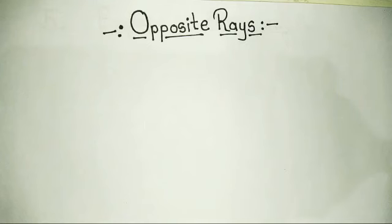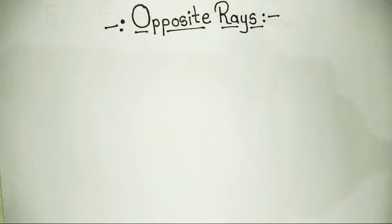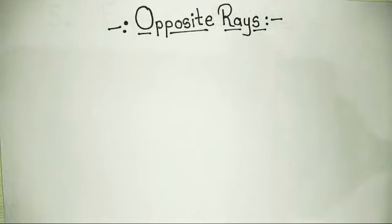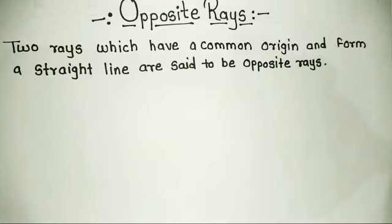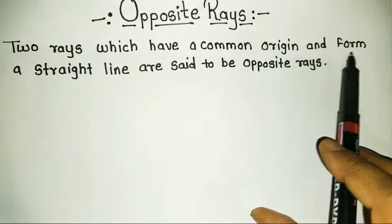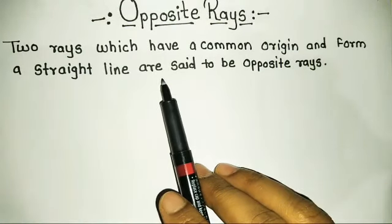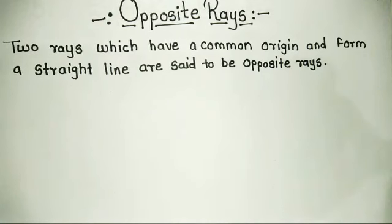Good afternoon students. Today we will study the concept of opposite rays. The definition of opposite rays is: two rays which have a common origin and form a straight line are said to be opposite rays.